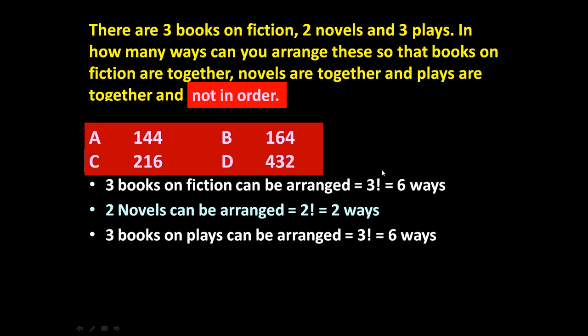The same steps apply. Three books on fiction can be arranged in factorial three, equal to six ways. Two novels can be arranged in factorial two, equal to two ways. And three plays can be arranged in factorial three, equal to six ways.